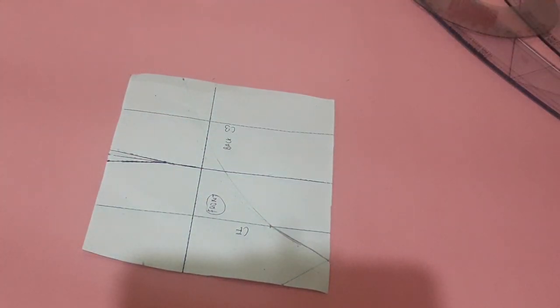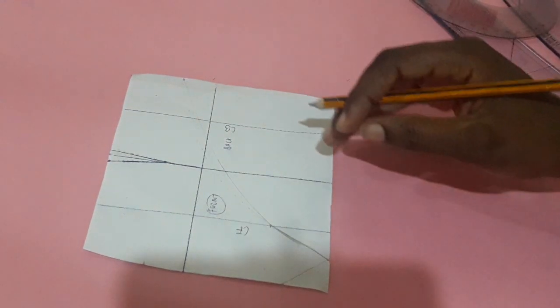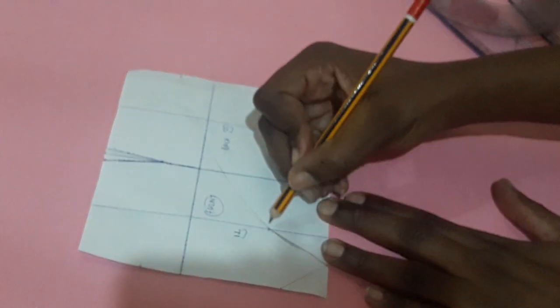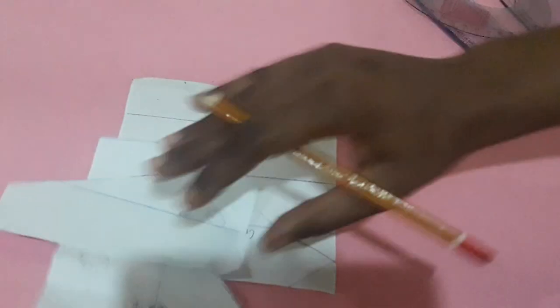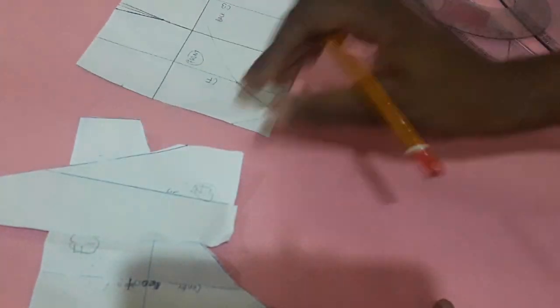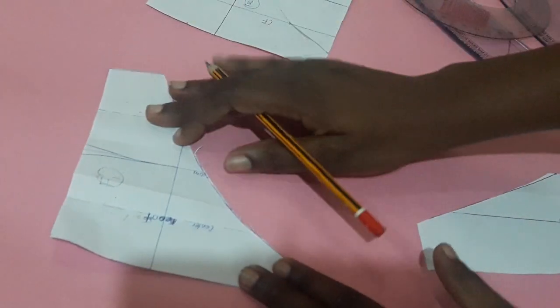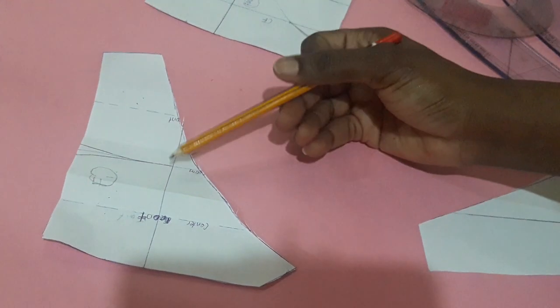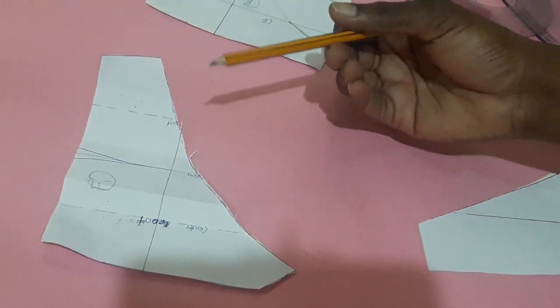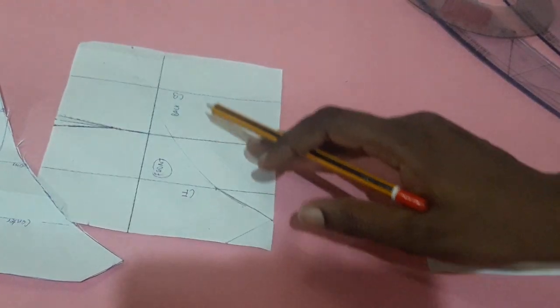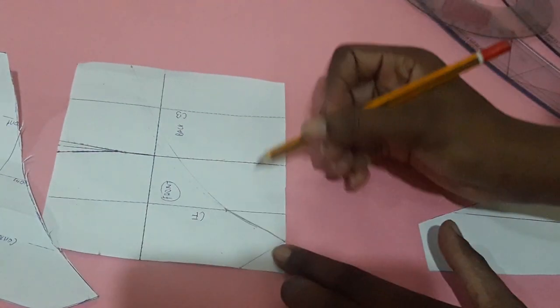The next thing that we're going to do is to cut it out. So I'm just going to cut it out. Now I have my cutouts. Now this is just the first part. This is exactly how the cutout looks like.